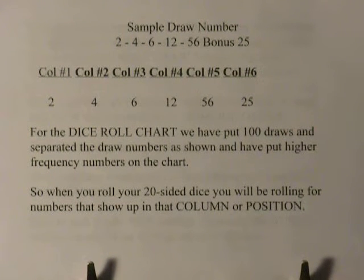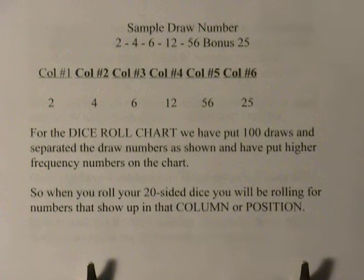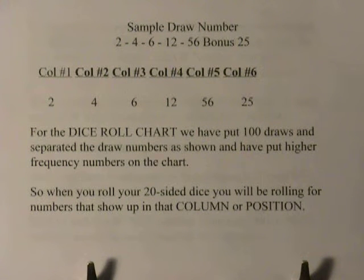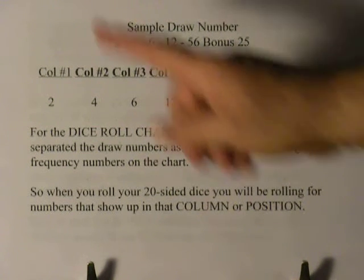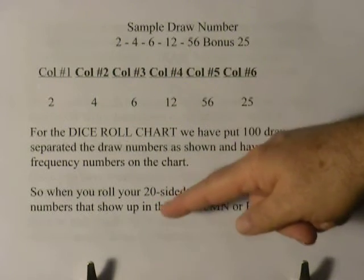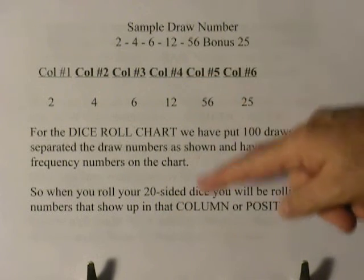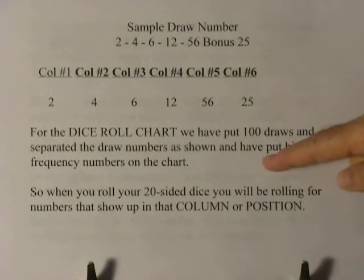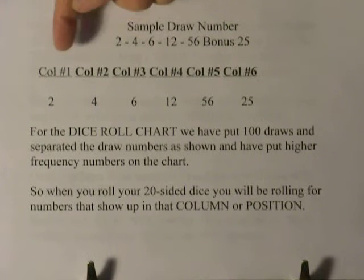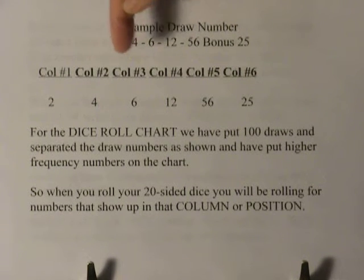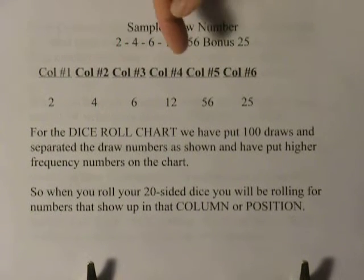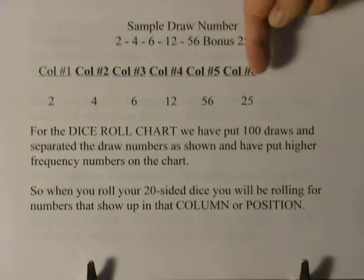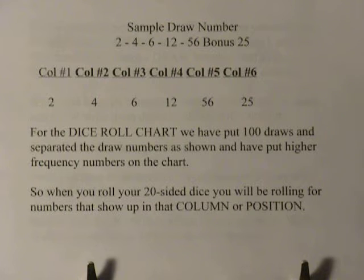Sample draw: 2, 4, 6, 12, 56, bonus 25. Column one is position one, column two is position two, column three is position three, column four is position four, column five is position five, and column six is position six.